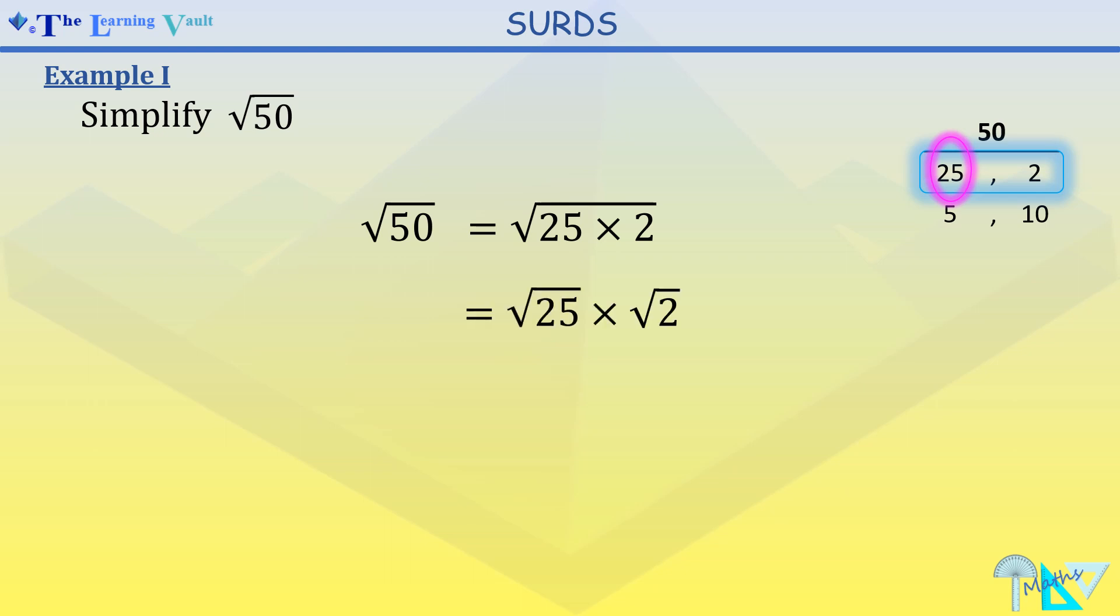So square root of 50 we can break down as square root of 25 times square root of 2, and square root of 25 is 5. Square root of 2, being an irrational number, will not break down any further. So our answer left in surds is 5 square root of 2.